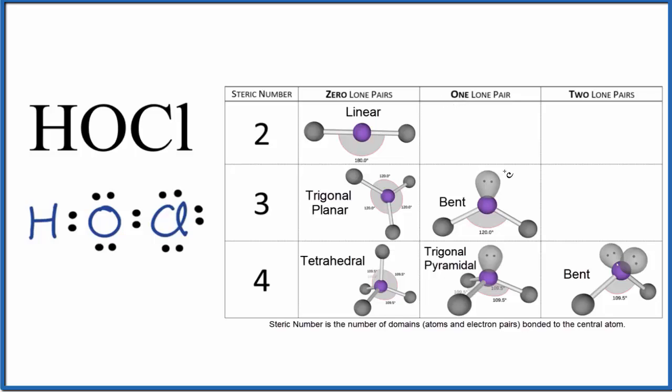So the first thing we need is a Lewis structure. So this is the Lewis structure for hypochlorous acid, HOCl. If you need help drawing the Lewis structure, there's a link at the end of the video. So we have our Lewis structure.